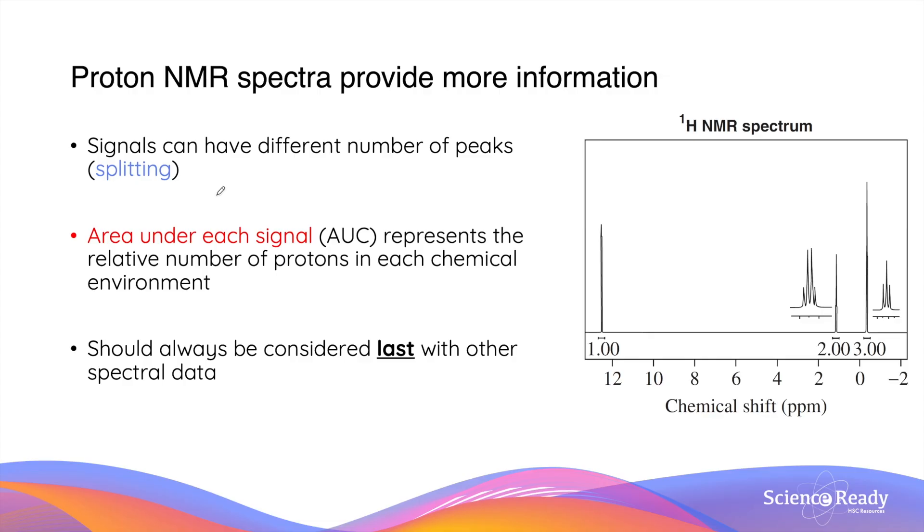In addition, proton NMR spectra also provide more information. Specifically, this is in two ways. Signals in a proton NMR can exhibit different number of peaks. This is known as splitting.